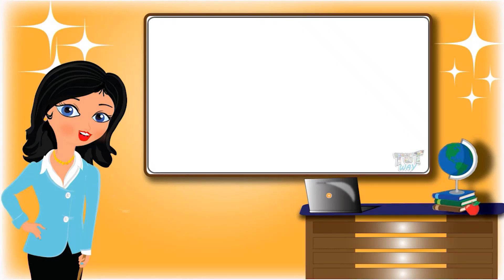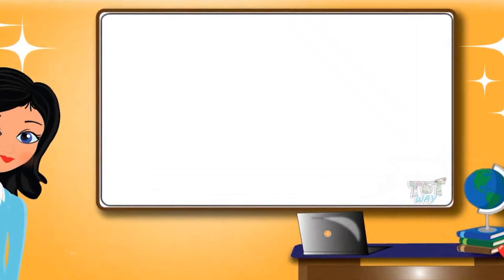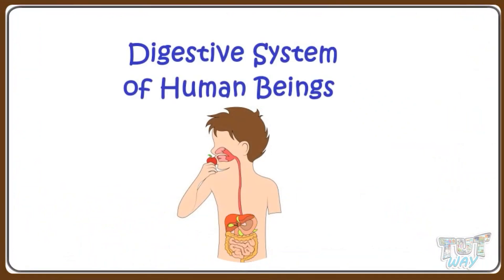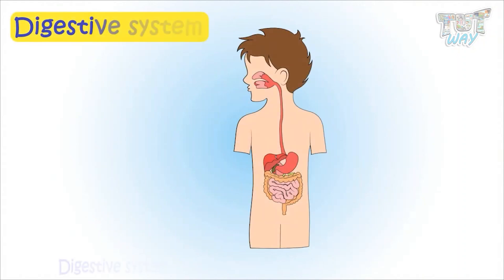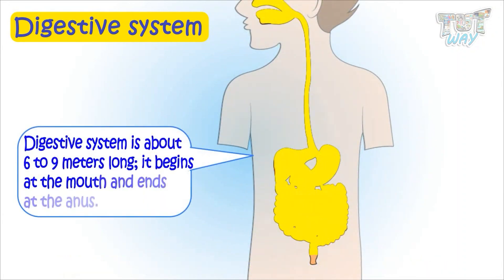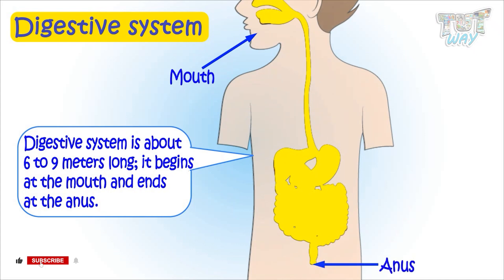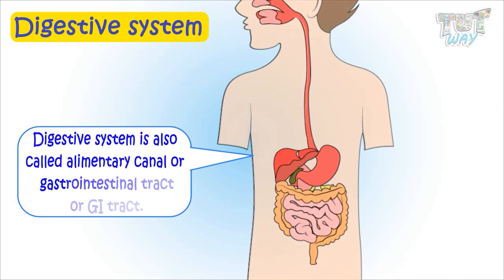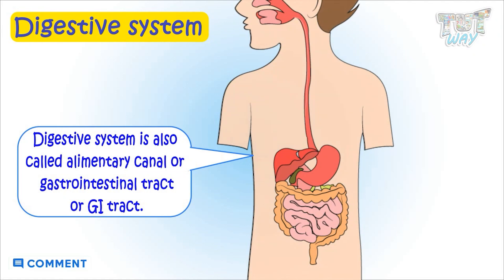Hi kids! Today we will learn about the digestive system of humans. So let's start. The digestive system is a muscular structure like a coiled tube, which is about 6 to 9 meters long. It begins at the mouth and ends at the anus. It is also called the alimentary canal, or gastrointestinal tract, or GI tract in short.